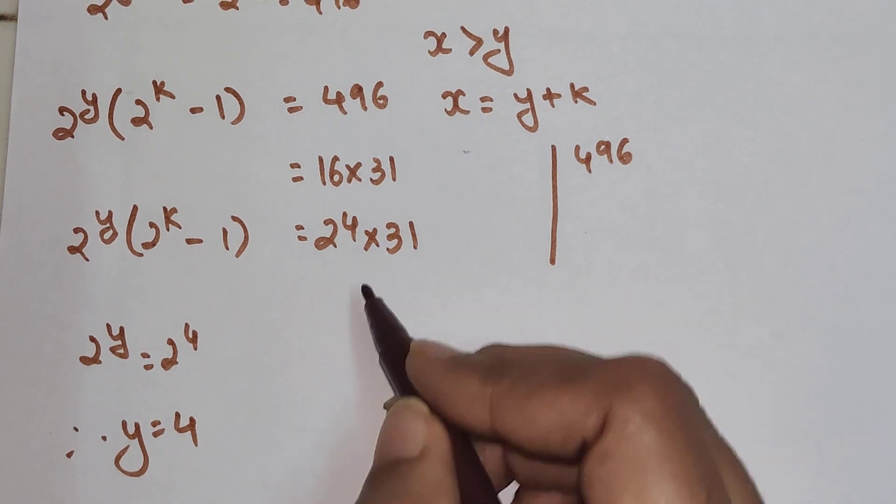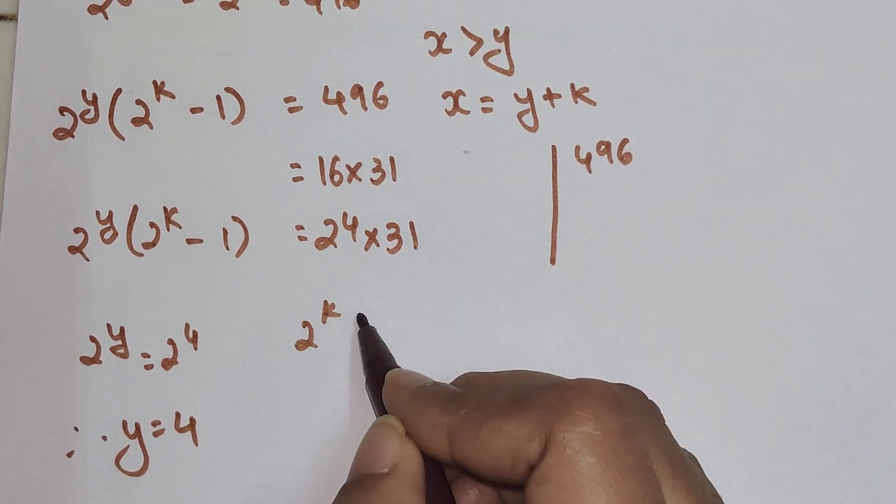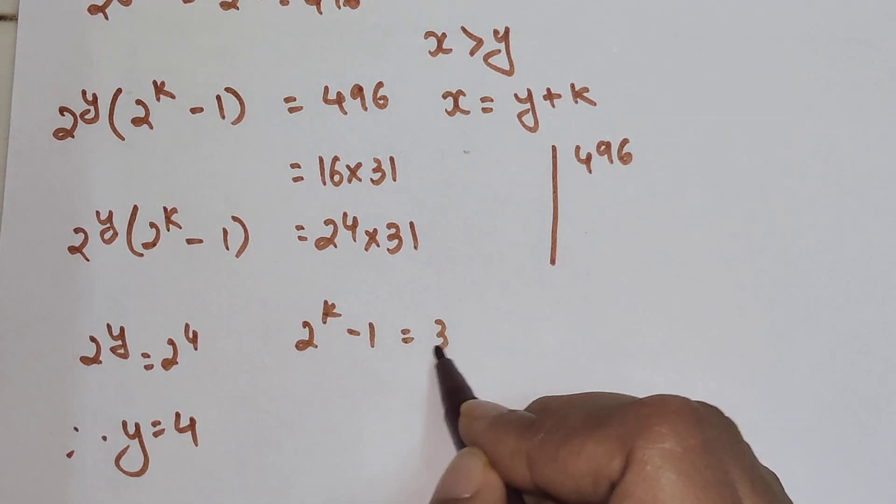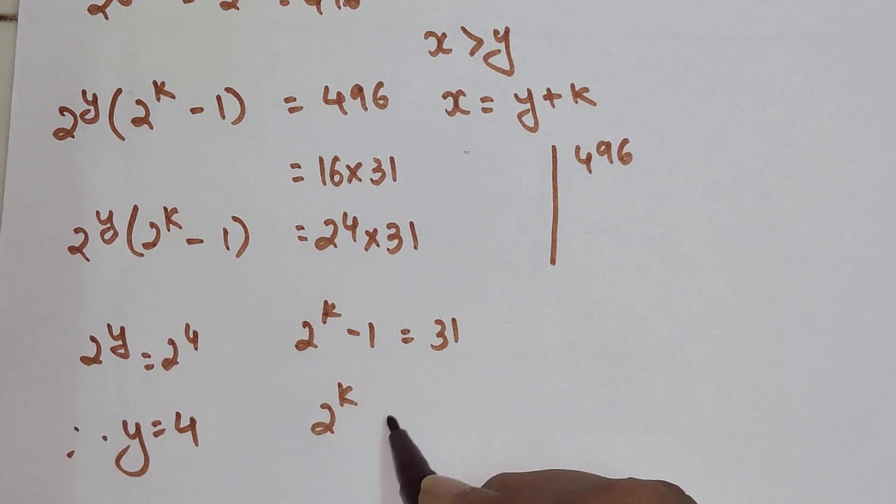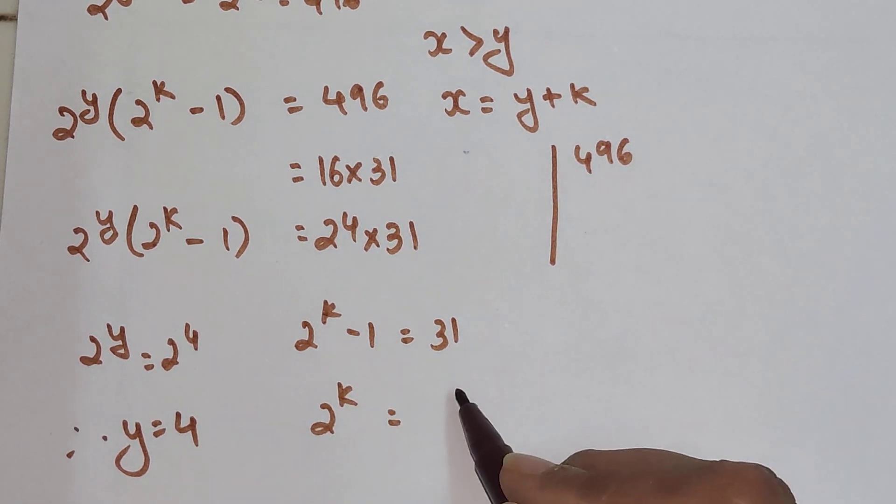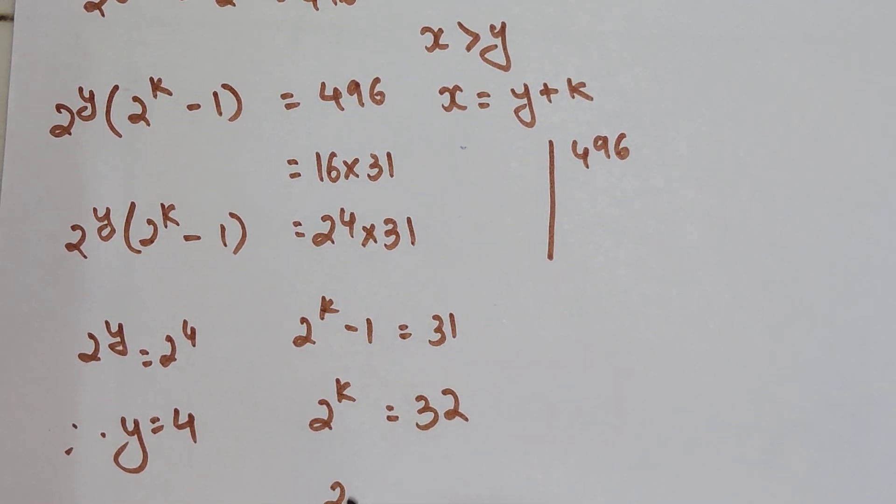Because the bases are the same, I can say 2 raised to k minus 1 equals 31. So 2 raised to k equals 31 plus 1, which gets you 32. So k equals 5 because 2 raised to 5 equals 32.